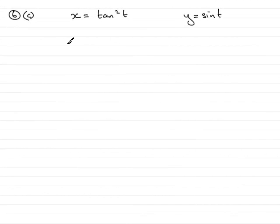Now for 6 Part C, we need to find the Cartesian equation from this parametric equation in the form y² equals some function of x. We start with x equals tan²t, and we need to link this to sin t over here.